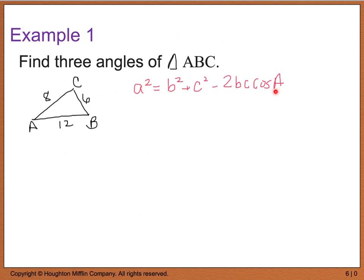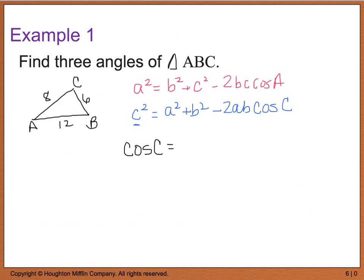When dealing with the law of cosines, you typically want to find the angle opposite the longest side first, because this tells you whether you're dealing with an acute or obtuse triangle. My longest side is 12, so I'm finding angle C. Rewriting the formula: c squared equals a squared plus b squared minus 2ab times the cosine of C. Solving for cosine of C: move the side lengths over and divide by negative 2ab.